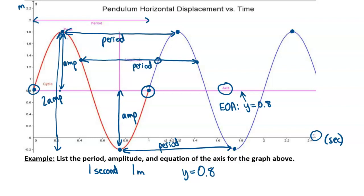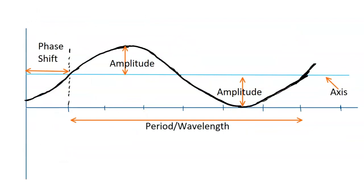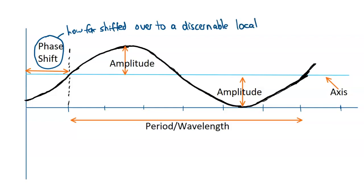Now let's talk about the phase shift. This graph looks very similar to the one above but with one distinct difference: the phase shift is how far it has shifted over to a discernible location. Discernible locations include the equation of the axis going up, at a maximum, the equation of the axis going down, or at a minimum. The wave is shifted over some x distance to have that discernible location where it's going up from the equation of the axis.